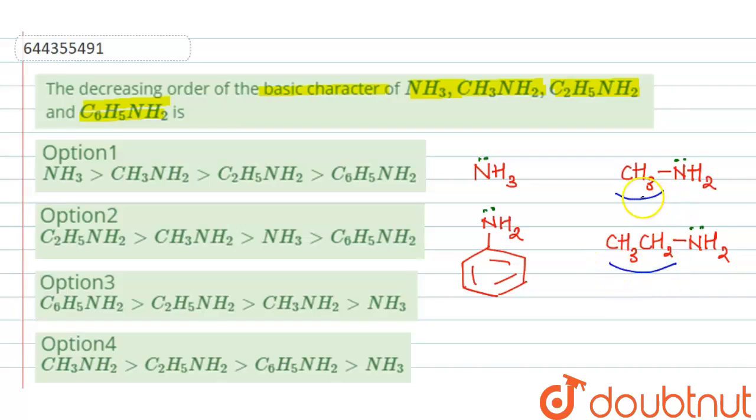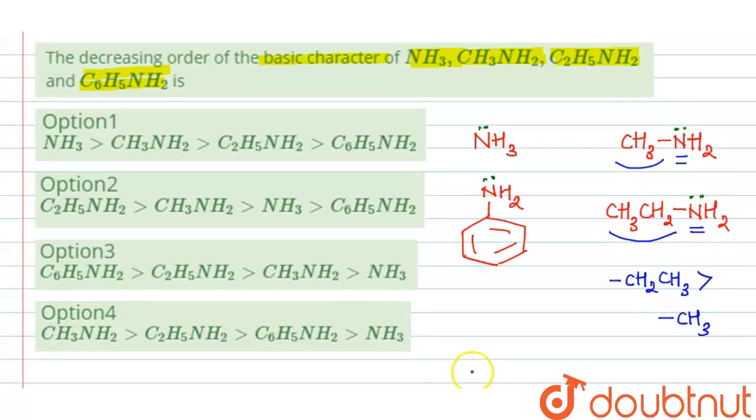alkyl groups, they increase the electron density on nitrogen atom. And since the plus I effect of the ethyl group is more than the methyl group, in this case which is ethylamine, the electron density on nitrogen atom is more as compared to that of methylamine. So ethylamine will be more basic.